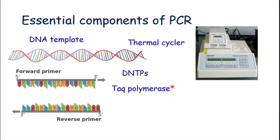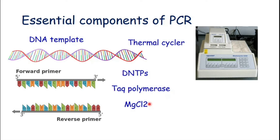We also need DNA polymerase, and in the case of PCR this is Taq polymerase. Taq polymerase is named so because it is isolated from Thermus aquaticus, which is a thermophilic bacterium. It can efficiently work at high temperature, which is about 72 degrees Celsius. The next thing we need is magnesium chloride, which acts as a cofactor during the PCR reaction.